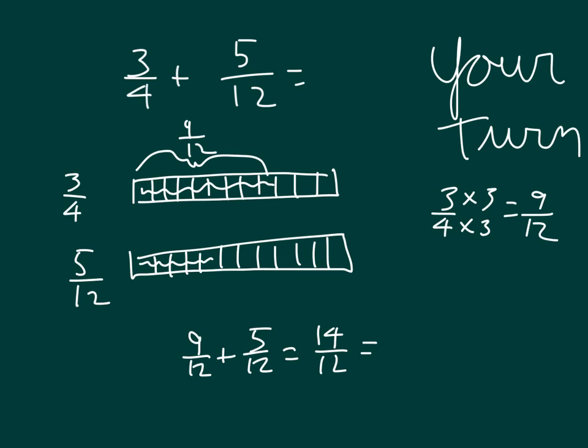Did you rewrite fourteen-twelfths as a mixed number? And then did you simplify further? Make sure you have that whole written. One and two-twelfths simplifies to one and one-sixth.